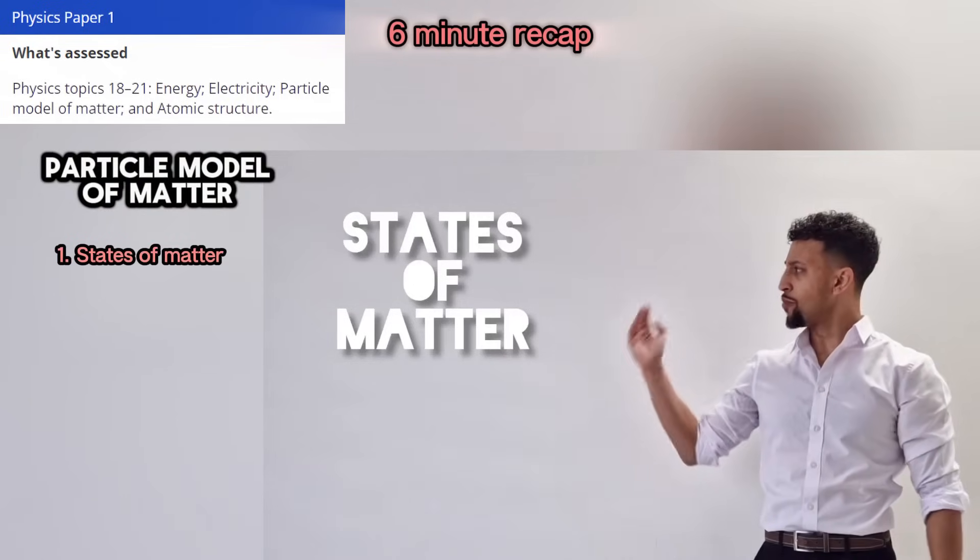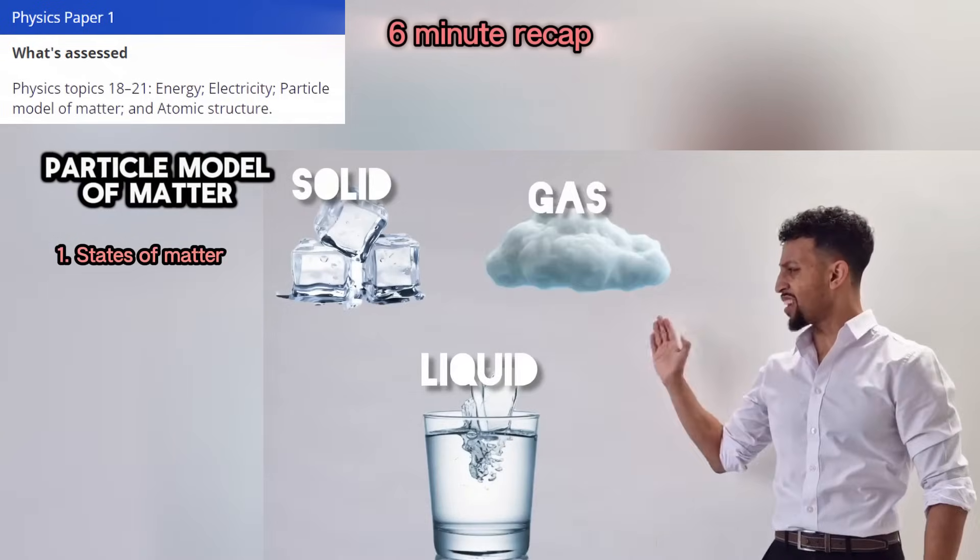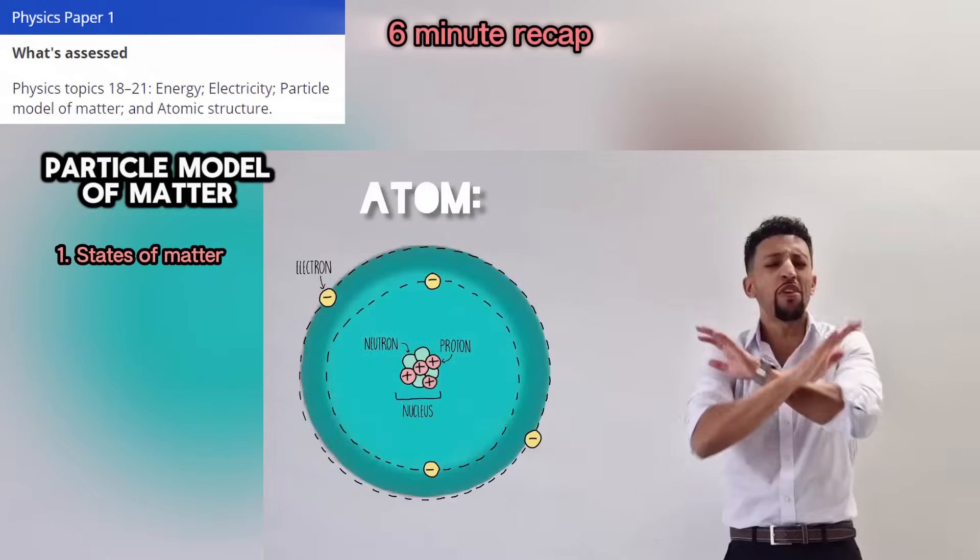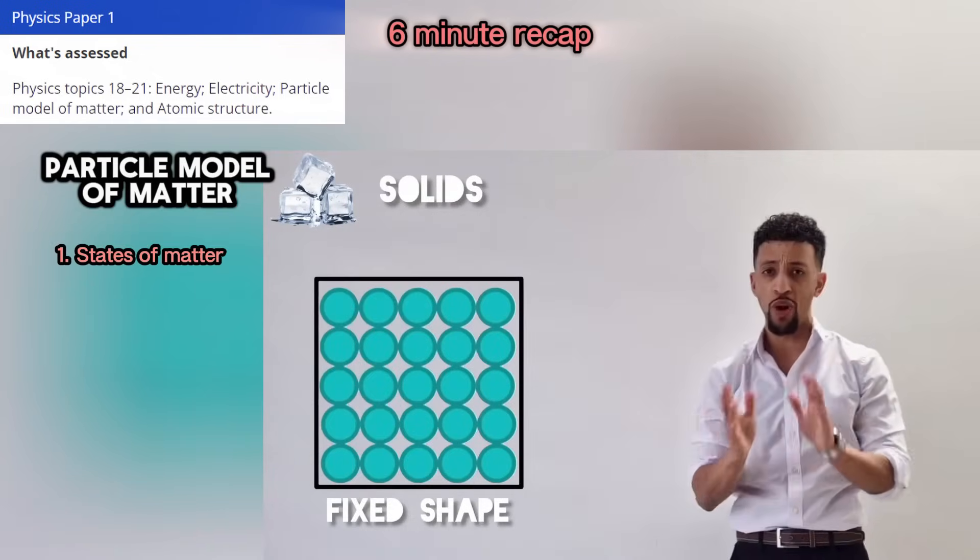I'm going to teach you states of matter while trying to be the greatest rapper. There's solid, liquid and gas. All three states are made up of mass. All three states are made up of atoms. Solids first, I'll show you their pattern. Fixed shapes, I'll show how it happens. They're arranged in layers and rows.